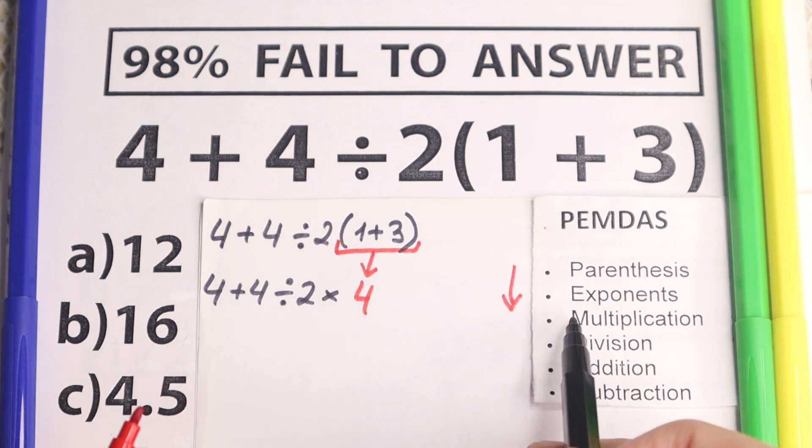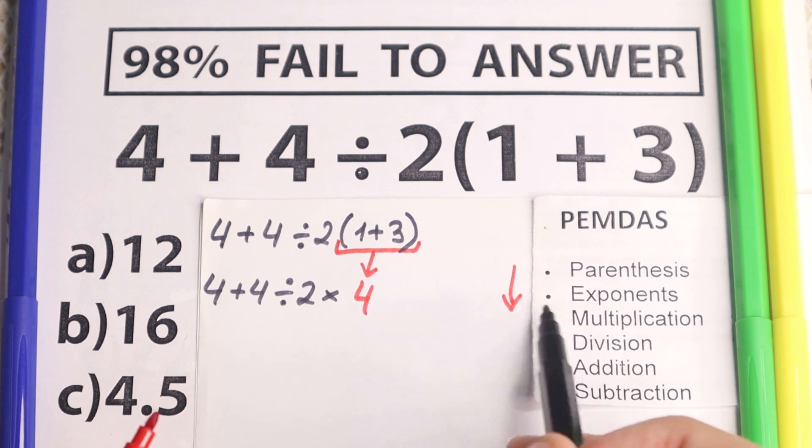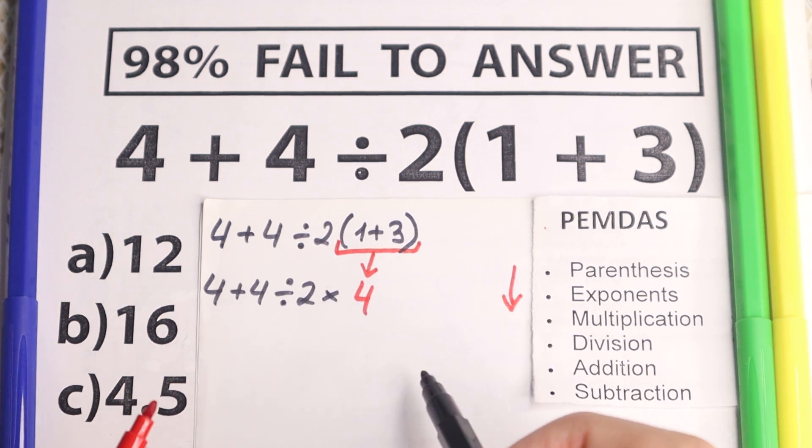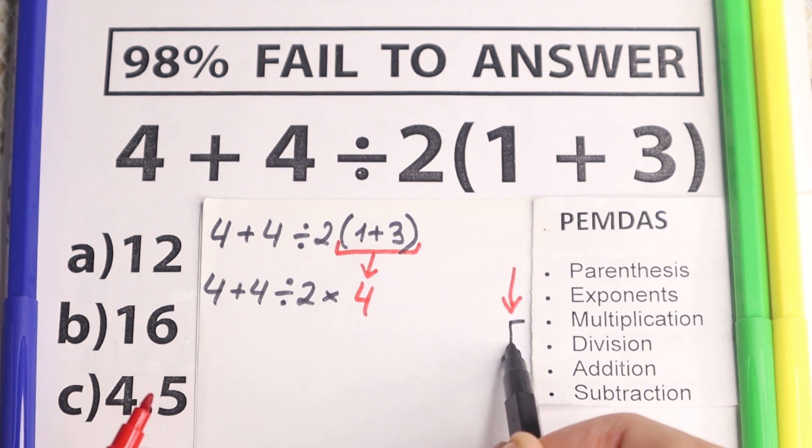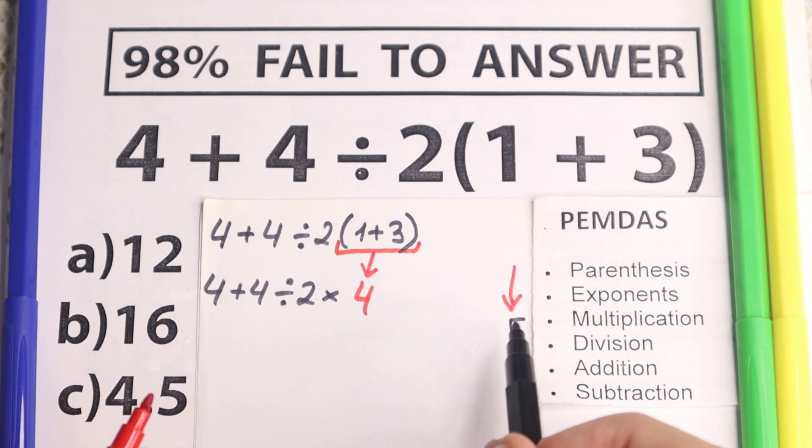The next part according to PEMDAS is multiplication. But a lot of students do this common mistake. They think, OK, multiplication, let's multiply it first. But this is maybe the main common mistake, because a correct solution to this step is to use multiplication and division as a group.